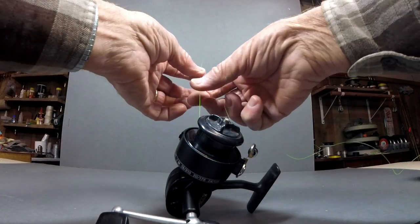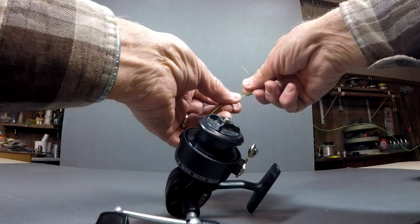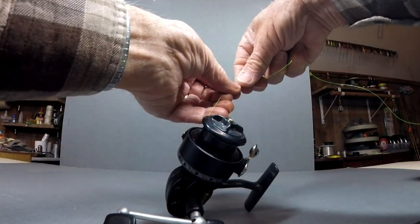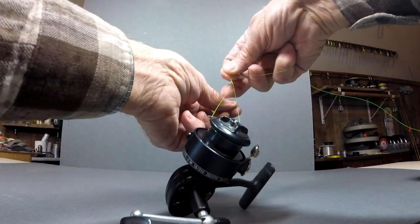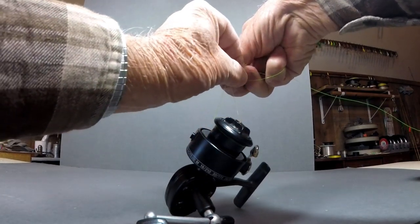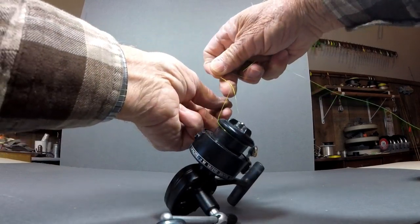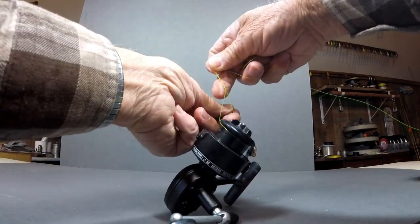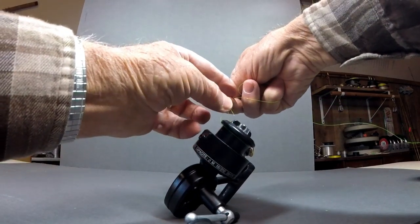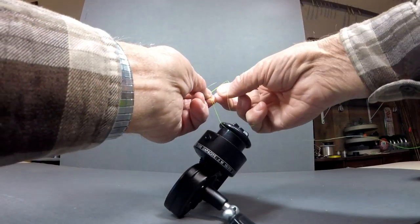Now we're going to tie some line on the spool of a spinning reel. Try this with your other knots like a Palomar knot or a Snell knot. The guide's knot will tie on any diameter of object with any size line.